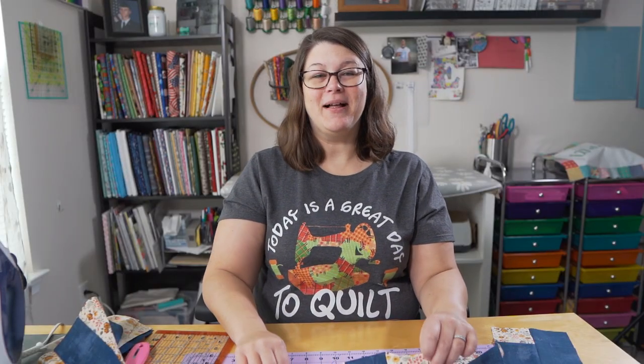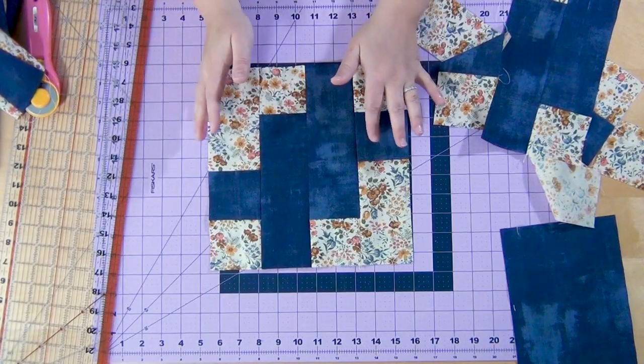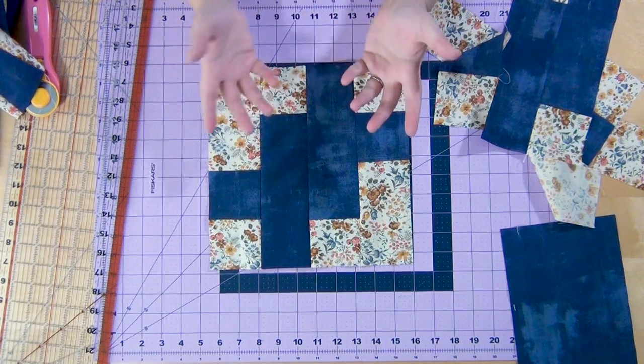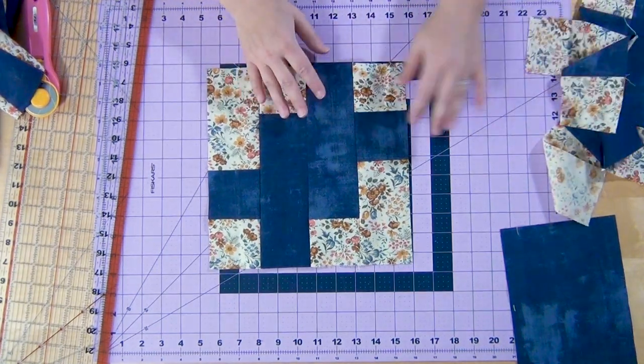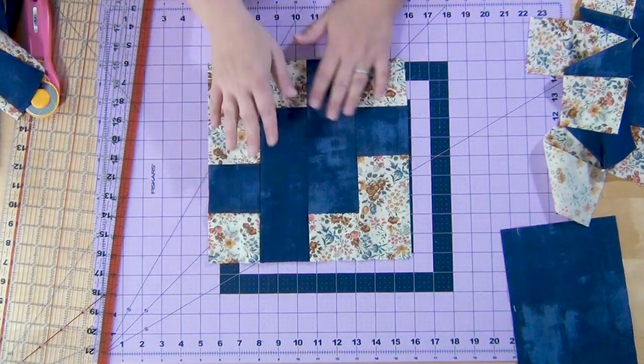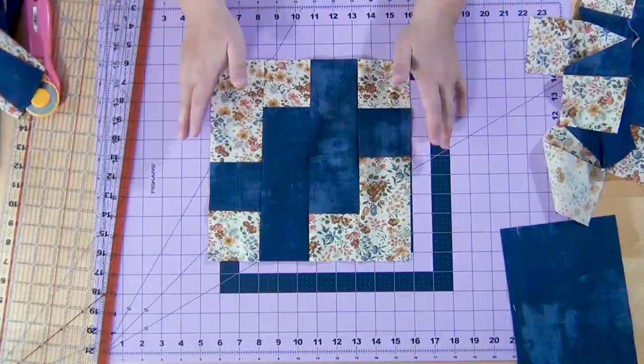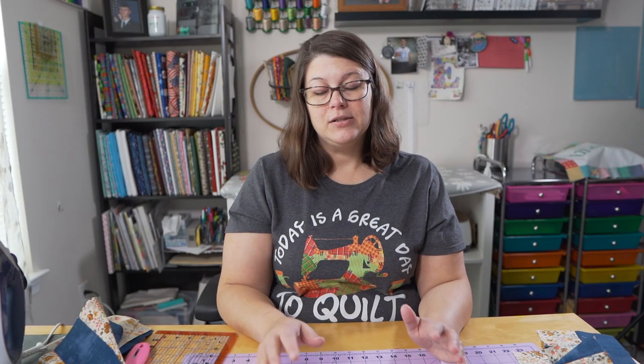So then you'll have your flip flop block. It's quick and easy. You don't have any seams that you need to line up. And it's a little bit forgiving for those who have a hard time keeping a quarter inch seam. Because you'll actually end up with a block that's a little bit larger than 10 and a half. So then you can just square it to 10 and a half. So have fun making your flip flop block. Thanks.